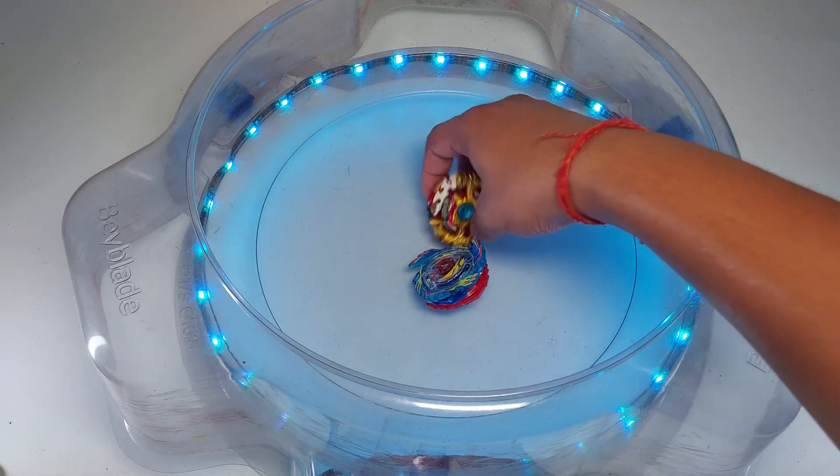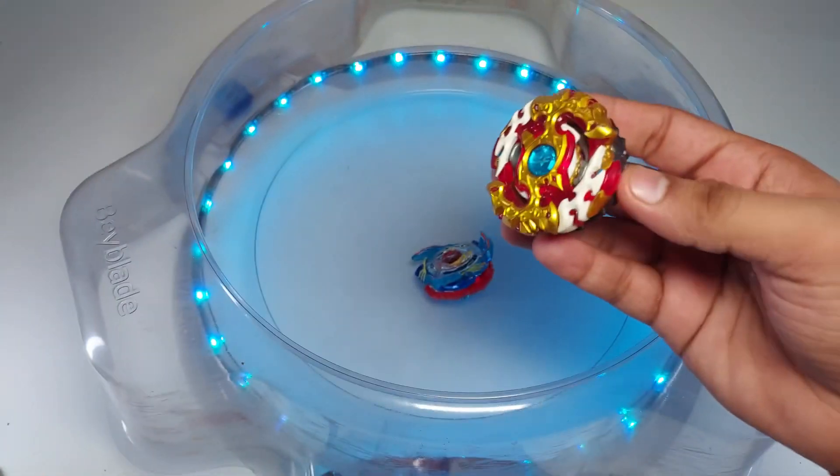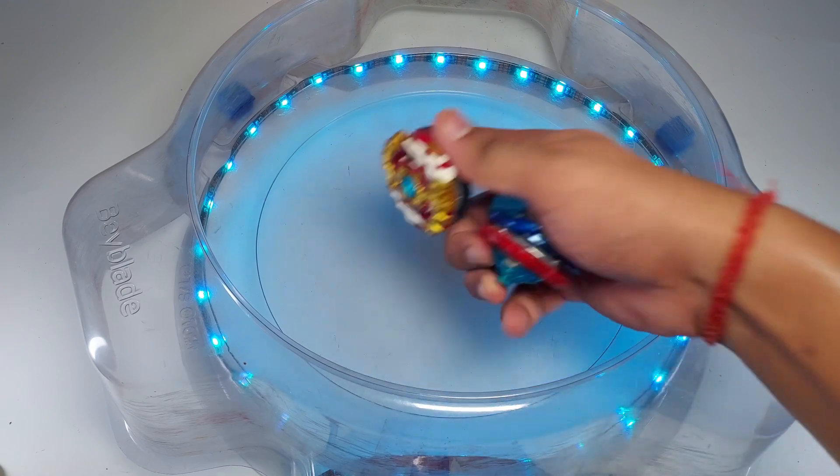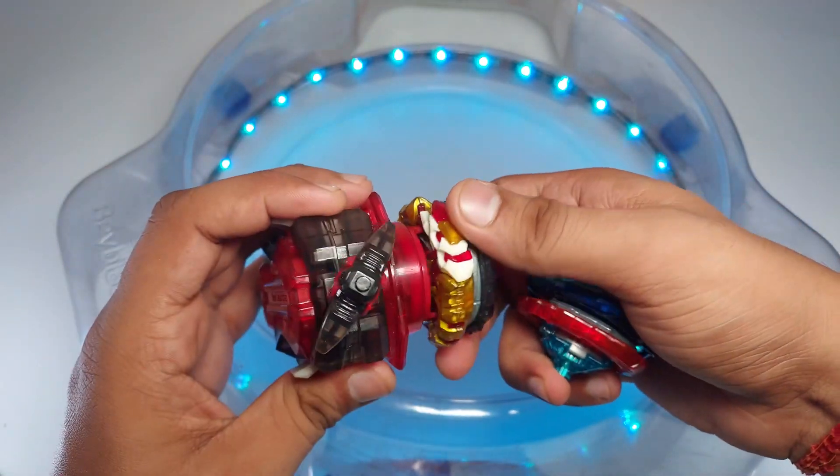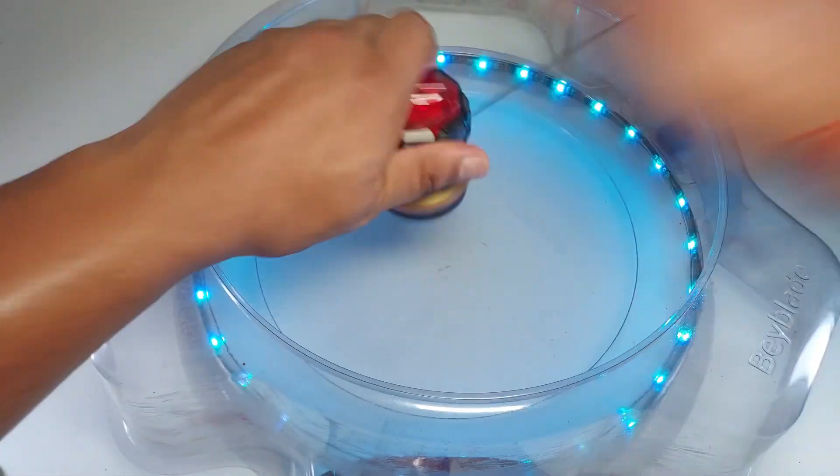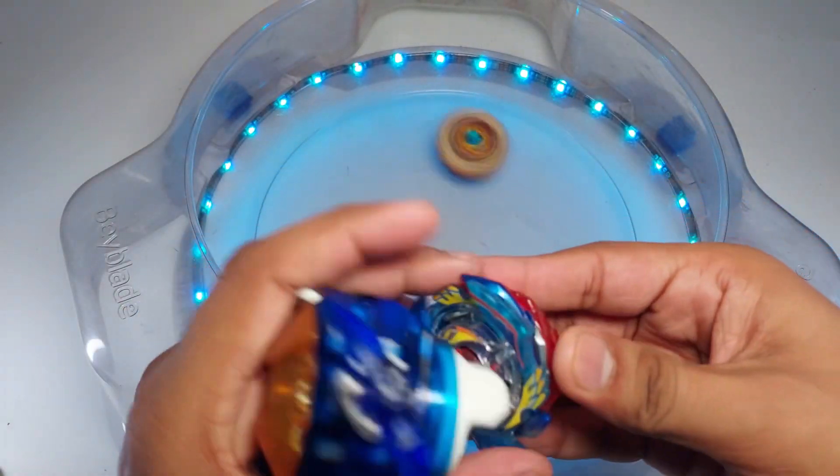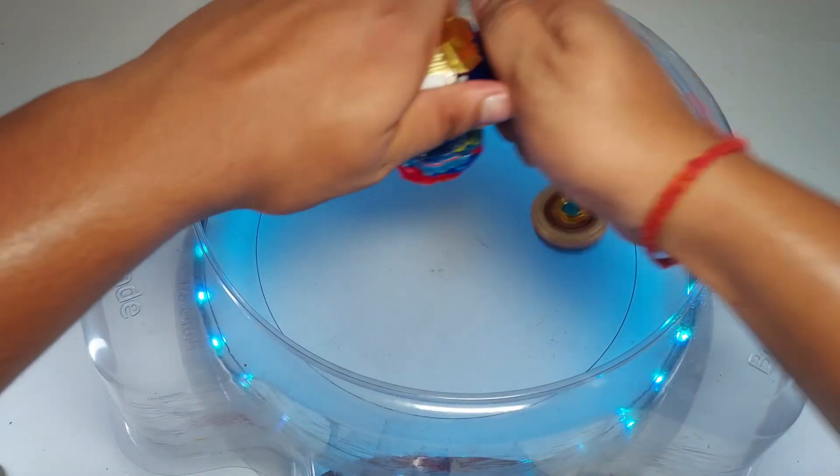Another win goes to Spriggan. I'm not sure what Valkyrie is doing. If Valkyrie doesn't get the next point it's game over, as Spriggan already has two points. Here we go, let it rip!